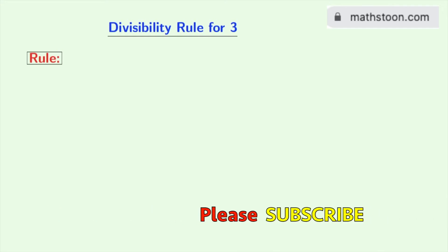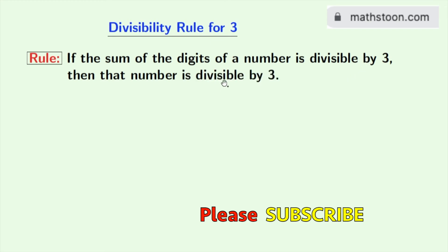The rule is given here. If the sum of the digits of a number is divisible by 3, then that number will be divisible by 3.